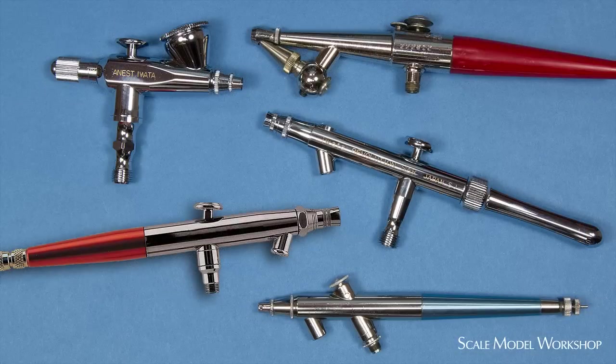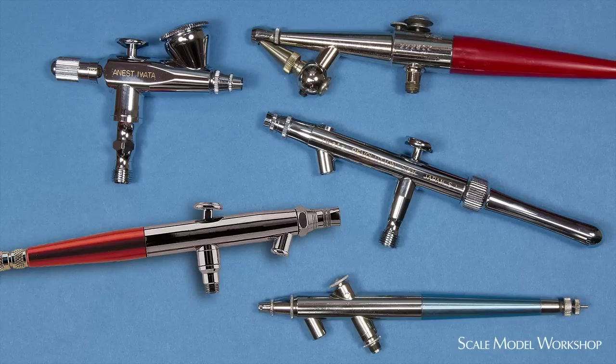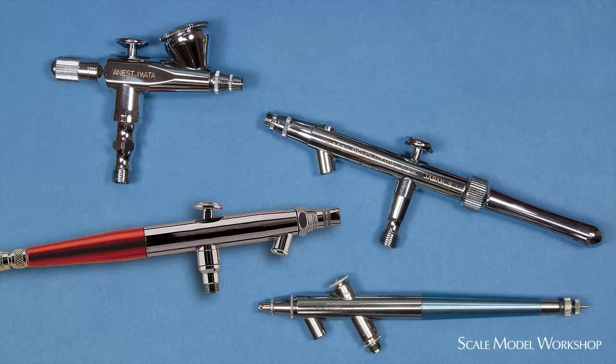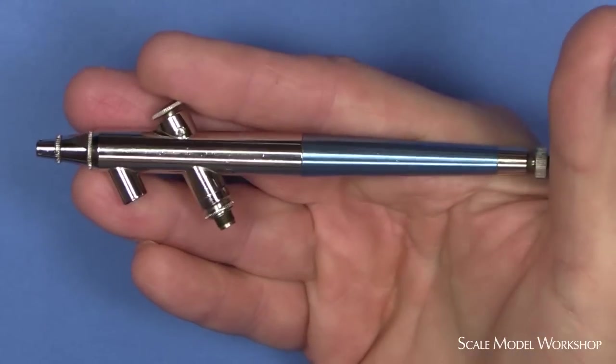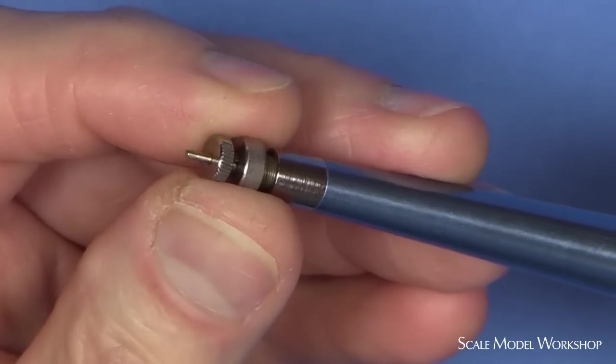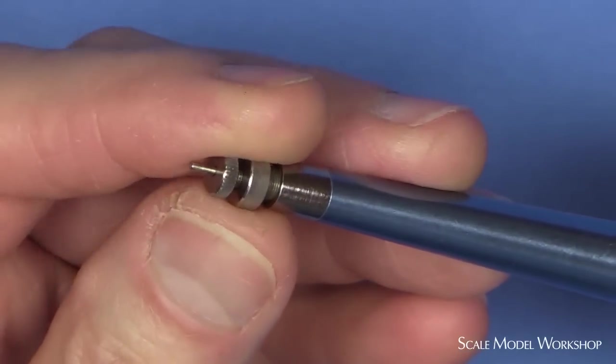For modelers who prefer the simpler design and operation of a single action airbrush, here are a few of the better known alternatives that offer improved atomization of internal mix with single action operation. The Badger 200 has been around for a long time. It's a very simple design. Adjust the material flow with the rear screw and you're ready to go.